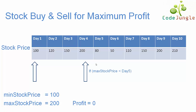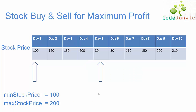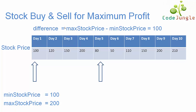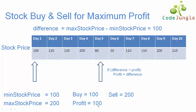In the next iteration, when we see that the maximum stock price value is not less than day 5, the condition becomes false. In that case we calculate the difference, which is maximum stock price (200) minus minimum stock price (100), giving a difference of 100. We check if the difference is greater than profit — since profit is 0, we assign the difference to profit, making profit 100. Our buying value becomes 100 and selling value becomes 200.